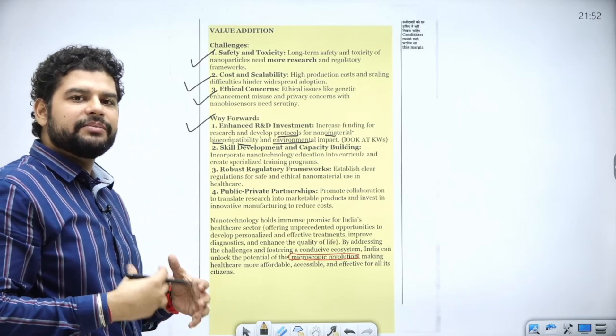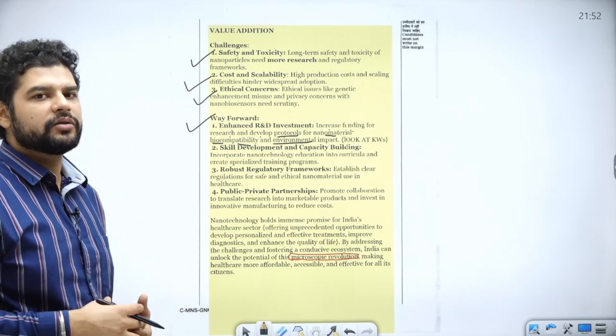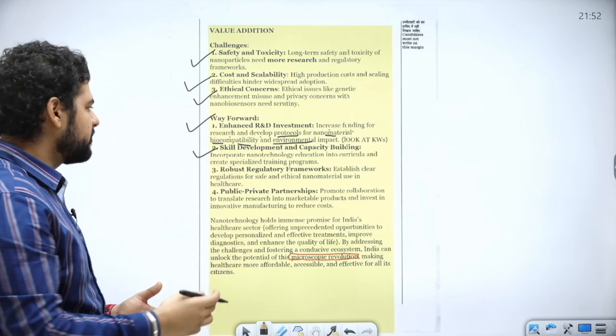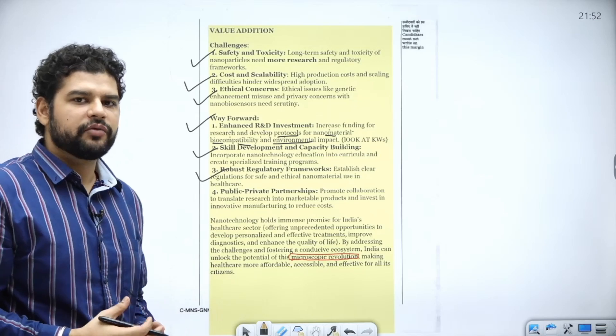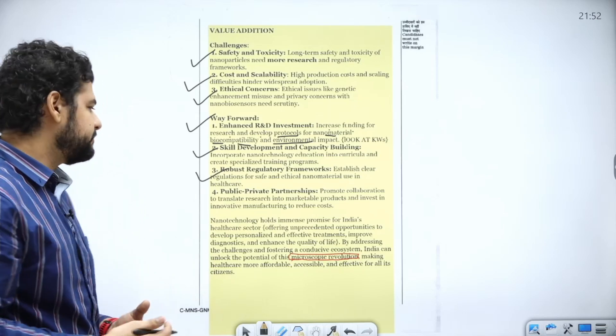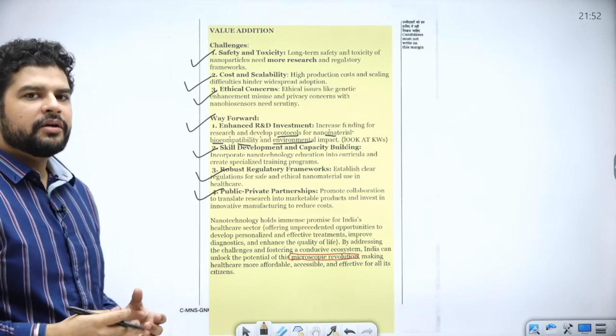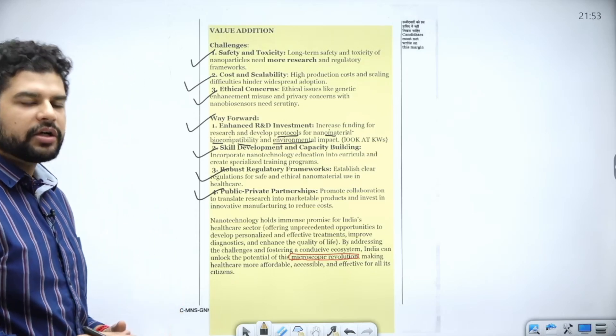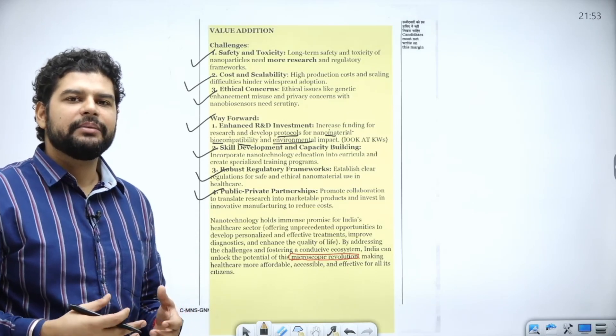Second is skill development and capacity building, of course that's very obvious. Robust regulatory framework, yes, because there are a lot of ethical issues involved in any upcoming technology. PPP, public-private partnership, of course we need the private money to step into this also.